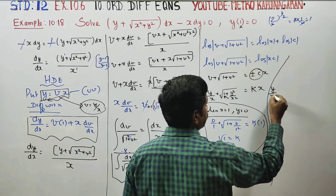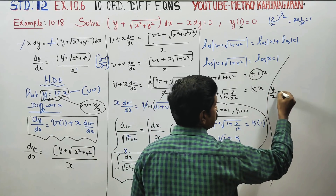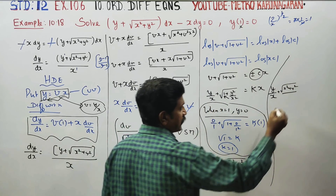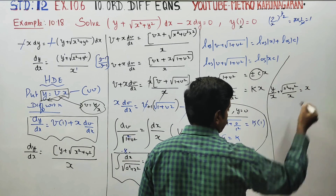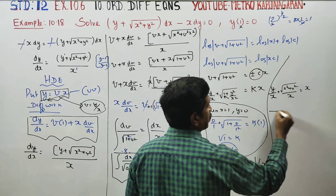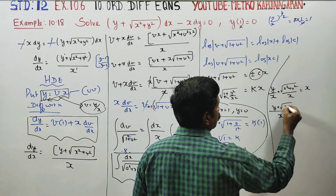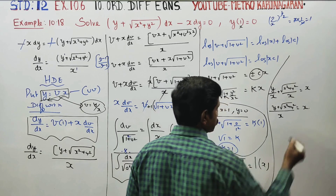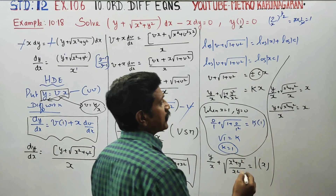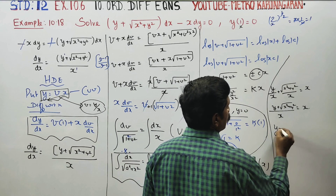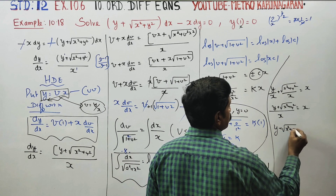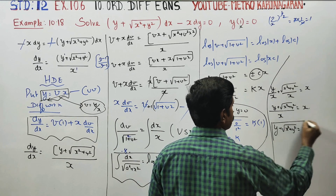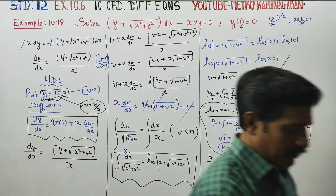Substituting back: y by x plus square root of x square plus y square divided by x equals 1 into x. Multiplying through by x: y plus root of x square plus y square equals x squared. This is the final answer.